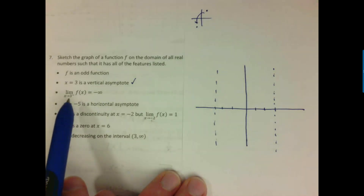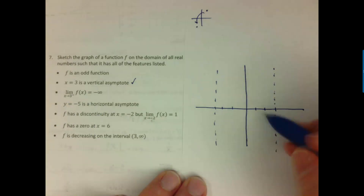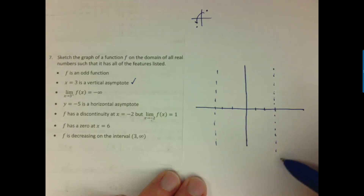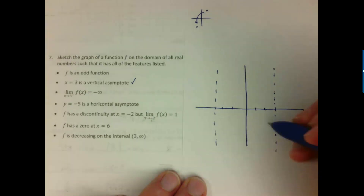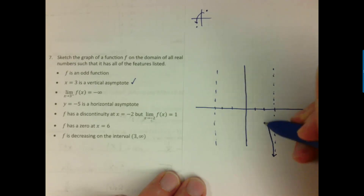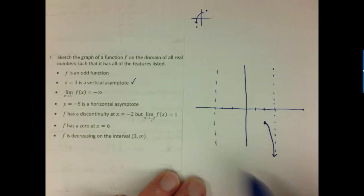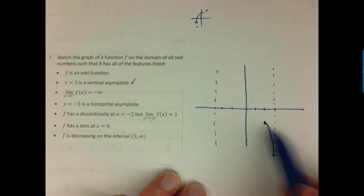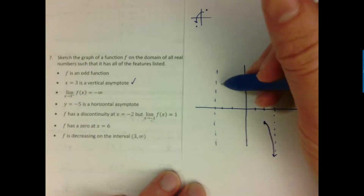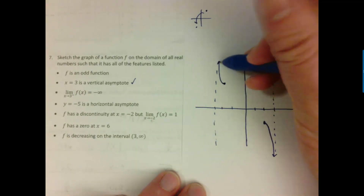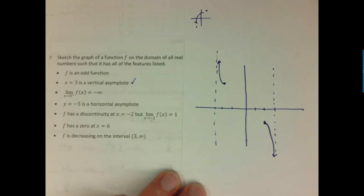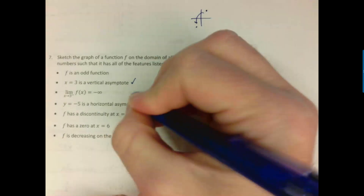The condition that as x approaches 3 from the negative side, the y values approach negative infinity means the curve goes downward approaching the asymptote from the left. By odd function symmetry, the corresponding part on the other side of the origin must mirror that behavior appropriately.